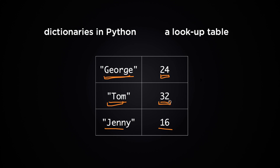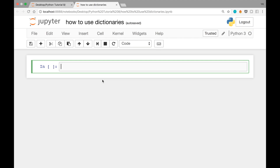These are sometimes called key-value pairs because we have a bunch of keys and a value associated with each of those keys. You can use a dictionary to store this kind of information. So let's see how we can do that in Python code to create a new dictionary.